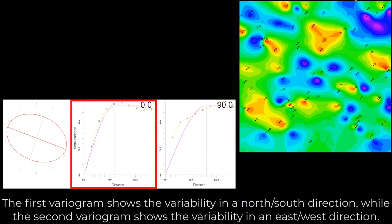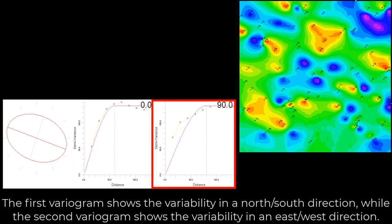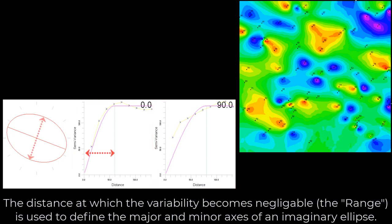The first variogram shows the variability in a north-south direction, while the second variogram shows the variability in an east-west direction. The distance at which the variability becomes negligible, also called the range, is used to define the major and minor axes of an imaginary ellipse.